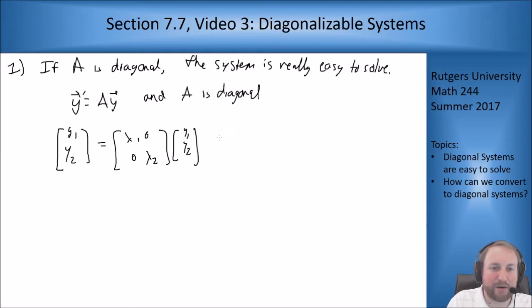What I can do with this is now try to write this out. If I multiply these matrices together, I get that this is lambda 1 y1, lambda 2 y2. So effectively, I now just have two equations: y1 prime equals lambda 1 y1, and y2 prime equals lambda 2 y2.